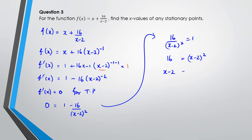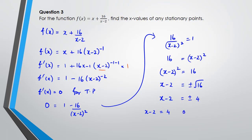So x minus 2 squared equals 16, meaning x minus 2 equals plus or minus the square root of 16, which is plus or minus 4. Separating the cases: x minus 2 equals 4 gives x equals 6, and x minus 2 equals negative 4 gives x equals negative 2. Those are the two correct answers. This question is worth an achieved mark, but you do need the correct solution with a correct derivative to get that achieved.